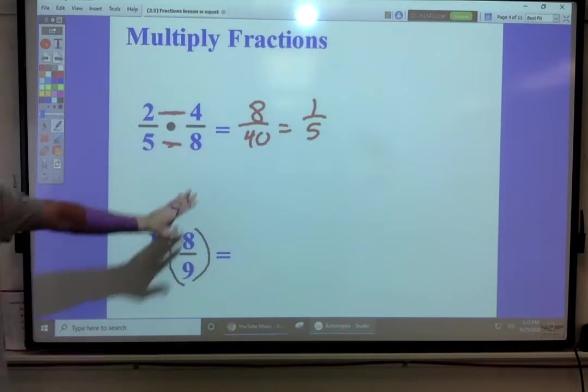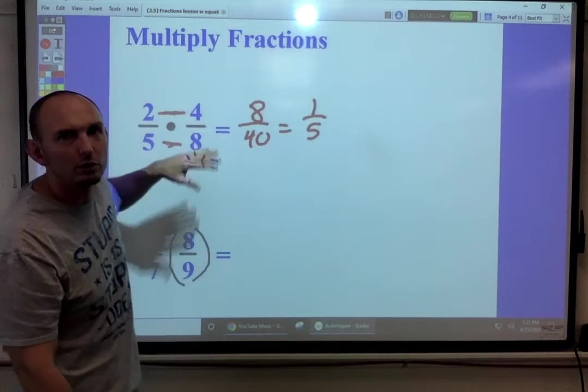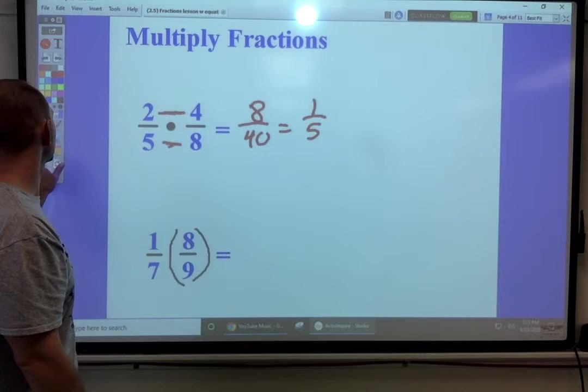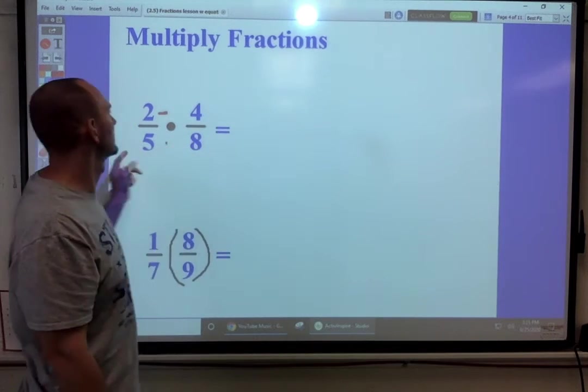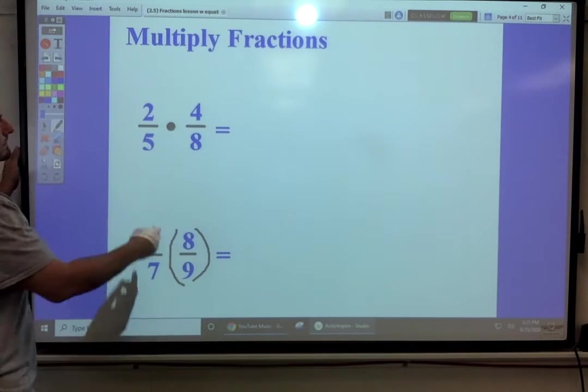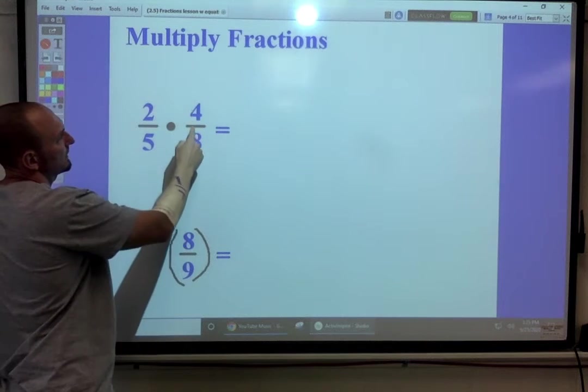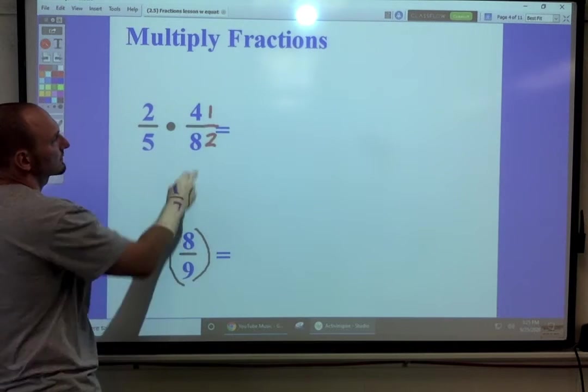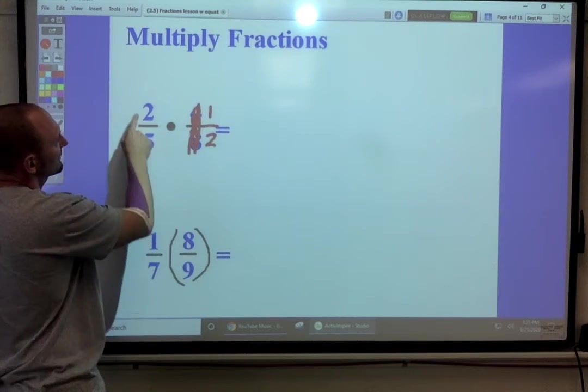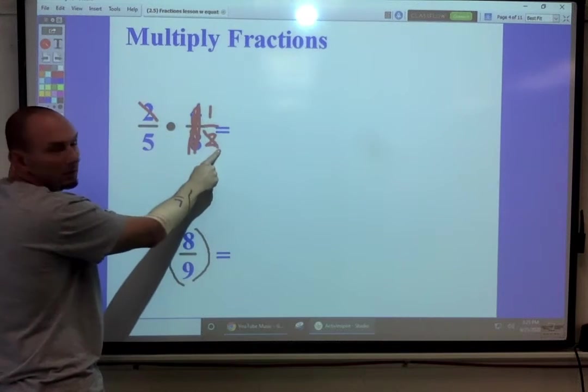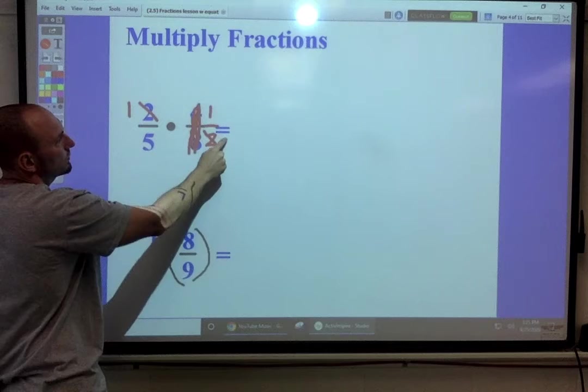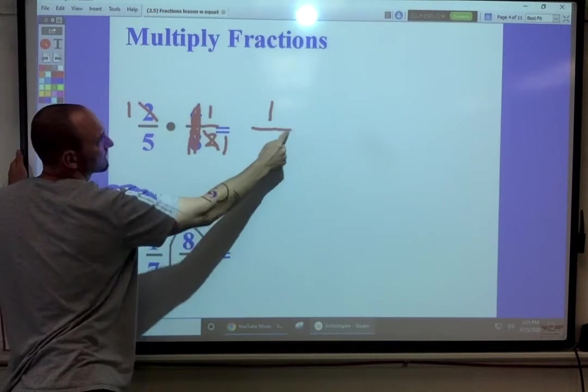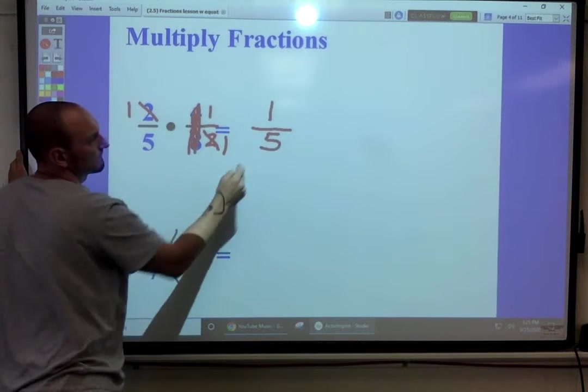If you're not good at reducing here, you can reduce them before you multiply them. That's something that can make life a little easier. I look at this and see four-eighths can be one-half. So that's really one-half. And then I have a two on the top and a two on the bottom. They can simplify down to ones. It's really one times one, five times one, one-fifth.